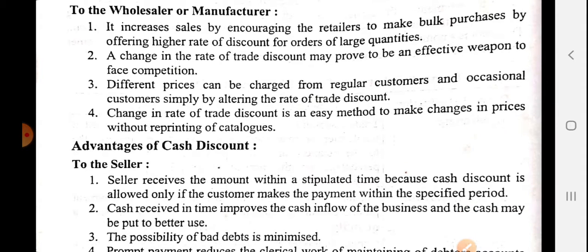Third, different prices can be charged from regular and occasional customers simply by altering the rate of trade discount. Also, a change in the rate of trade discount is an easy method to change prices without reprinting the catalog. Catalog pe MRP print hota hai, lekin wholesaler aur manufacturer apne retailers ko actual lower price pe goods provide karte hain — baar baar reprinting ki zaroorat nahi padti.